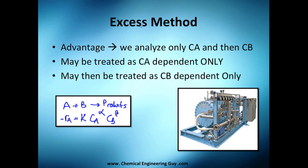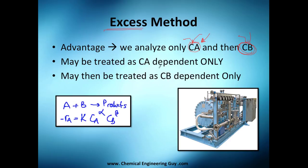Now it's time to see the excess method. As the name implies, we're going to use a quantity in excess. The advantage is that we can analyze either A or B. For example, if we use an excess of A, we can treat it as a constant and see how the reaction depends on the concentration of B. Then we do the same with B in excess to analyze A.